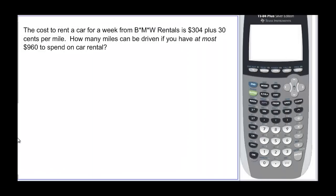The cost to rent a car per week from BMW rentals is 304 plus 30 cents per mile. How many miles can be driven if you have at most 960 dollars to spend on a rental car? So we know that the cost has to be at most 960 dollars. Well what is the cost? The cost is made up of the 304 dollars plus the 30 cents per mile. So we have 304 plus 0.30 which is the 30 cents per mile means times the number of miles and we're going to let m equal the number of miles driven.